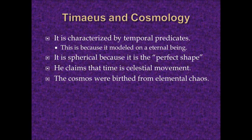Plato links cosmology to his Timaeus by saying that the cosmos were birthed from elemental chaos — such as earth, wind, water, and fire. He also claims that time is a celestial movement, and that is an important way of keeping track of time. It is also characterized by temporal predicates, because it is modeled on an eternal being. He also believes that the sphere is important because of its perfect shape and what it represents.